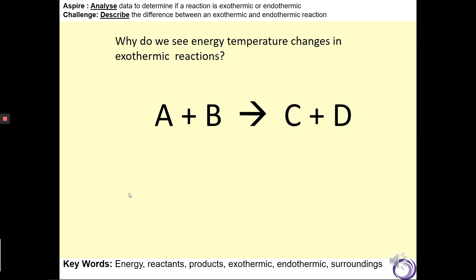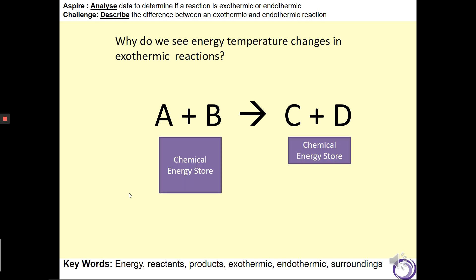Let's start with an exothermic reaction. Here we have chemicals A and B reacting to form C and D. If we look at the chemical energy store in the reactants and the products, we can see that the chemical energy store of A and B is greater than the chemical energy store of C and D. So some of the energy must be transferred to a different store. In the case of exothermic reactions, it is transferred to the thermal energy store.